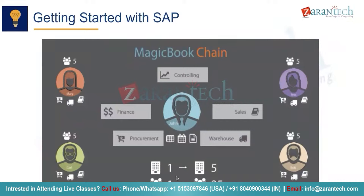In 1973, they started with R1. R stands for 'real time' — as I said in the magic book chain example, John could log into the ERP system and see real-time data on sales, procurement, and warehouse. So it's called real time. R1 means one tier — T-I-E-R. R2 is real time two tiers, and R3 is real time three tiers. R1 means presentation, application, and database all reside on the same host or the same server. That's the R1 architecture.